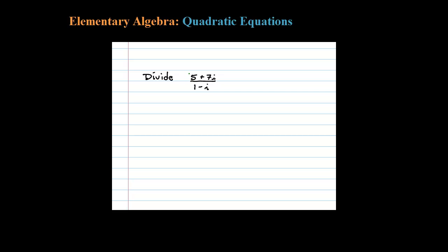Here we're asked to divide two complex numbers, and to do that what we're going to do is actually multiply by the conjugate of the denominator. So we have 1 minus i, the conjugate here would be 1 plus i.